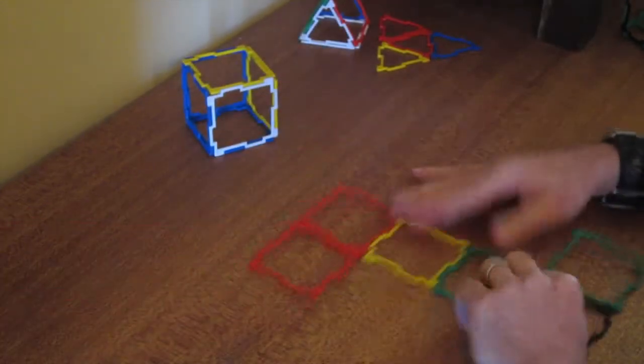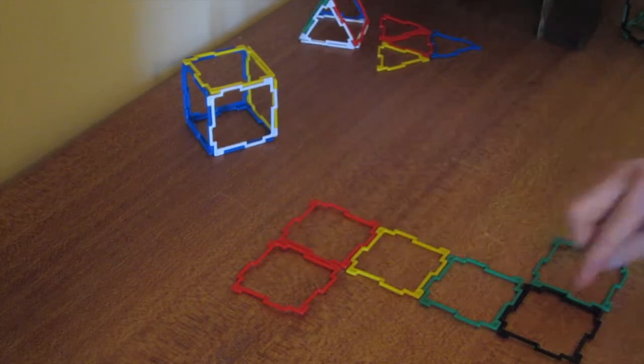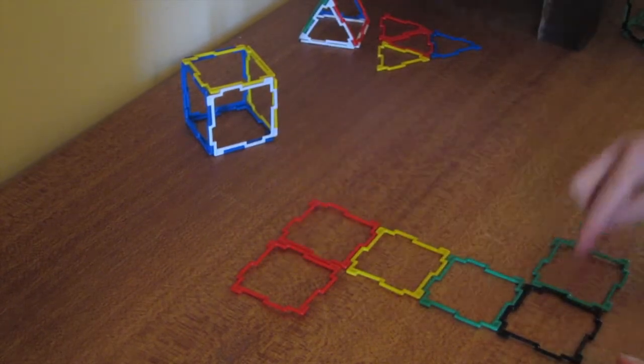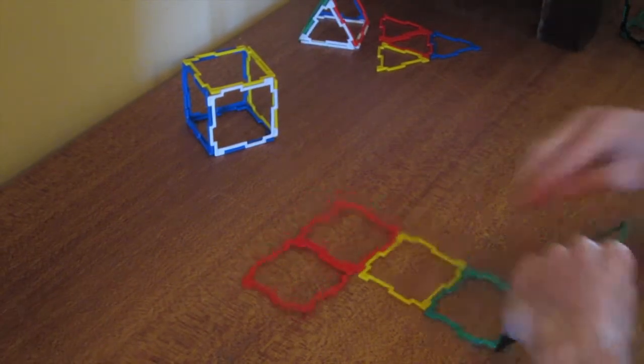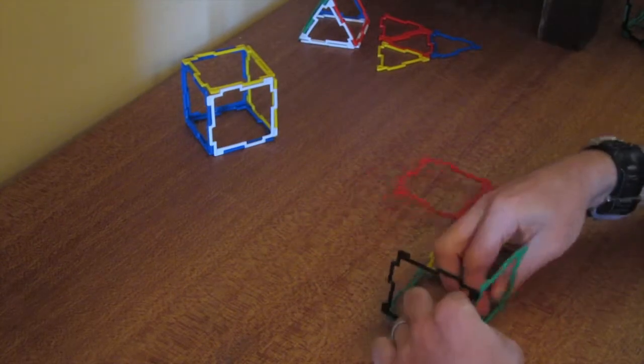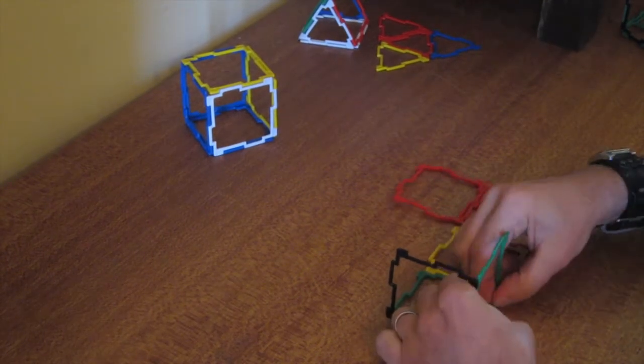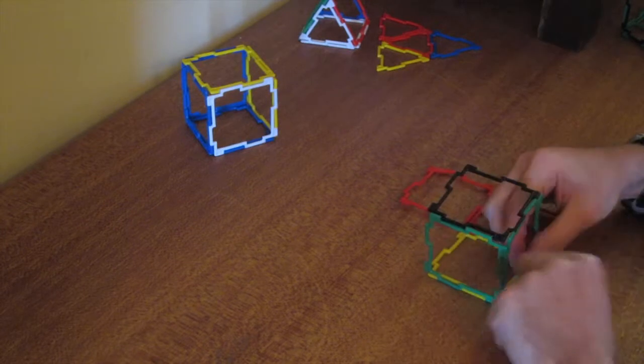Here is another net for a cube. This one - that last one was a bit like a staircase, this one more like an S shape. If I fold this up, once again, it is going to give me a nice cube.